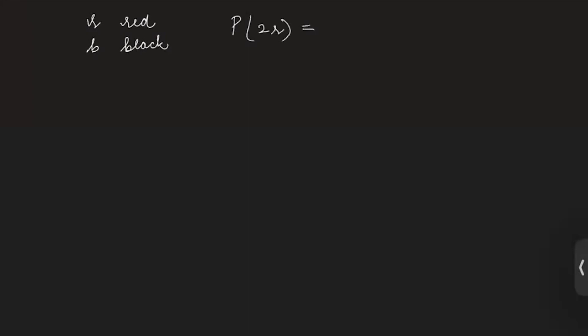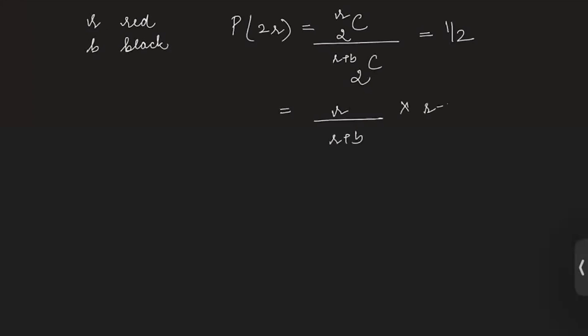In this question, let's assume we have r red socks and b black socks. We will write the probability of picking two red socks randomly, which is rC2 upon (r+b)C2. According to the question, it is equal to one by two. If we simplify it, we get: r/(r+b) × (r−1)/(r+b−1) = 1/2. Now this is one equation with two variables r and b.